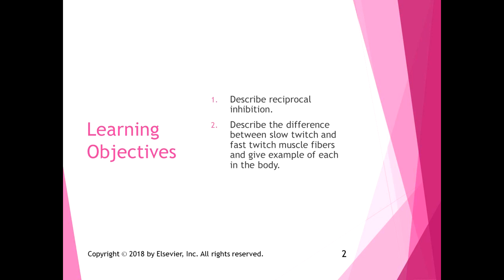The learning objectives for this section: I want you to be able to describe reciprocal inhibition on a neural level, and describe the difference between slow twitch and fast twitch muscle fibers and give an example of each in the body.